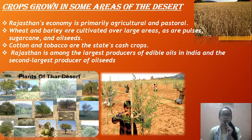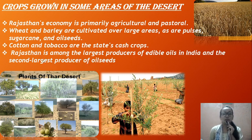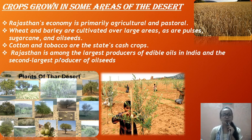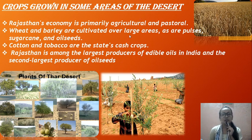Rajasthan is almost the largest producer of edible oils in India and the second largest producer of oilseeds. Mostly they produce oilseeds here, and cotton and tobacco are the cash crops of this desert area.